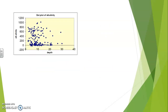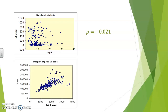Here is a scatter plot representing the alkalinity of a lake in terms of its depth. The coefficient of correlation is very close to zero — slightly negative — showing a bit of a decreasing trend, but in no way is this a perfect alignment. In contrast, when observing the price of a house in terms of the area of its first floor, we get a positive correlation coefficient of 0.781, which is quite high and closer to 1 than to 0. The alignment is quite observable.